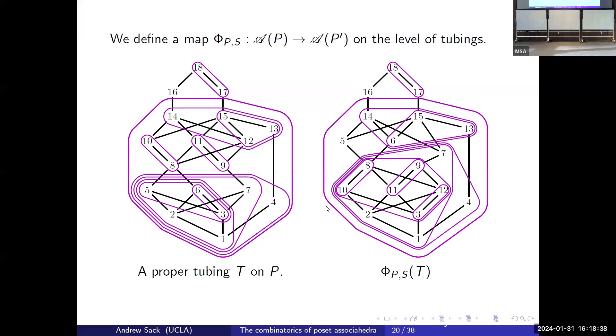This is exactly what we're doing, and what's very nice is now we can say that we get a bijective proof about the F vector. One thing I think I forgot to mention is that the number of tubes in a tubing is the co-dimension of the face, so we're really looking at all the faces. We're going to define a map from poset P to the S-flipped poset P prime on tubings of a given level, and it's going to preserve the number of tubes.